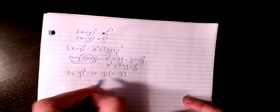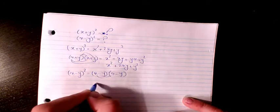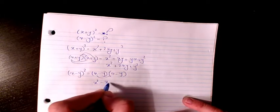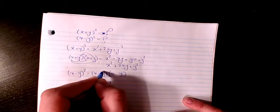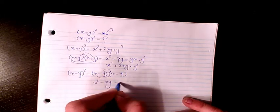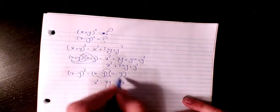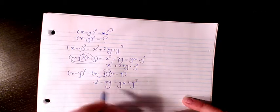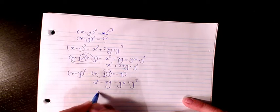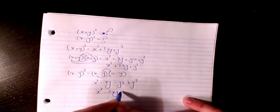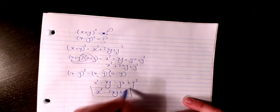x times x is x², then negative xy, then negative y times x, and negative y times negative y is positive y². So the result is x² − 2xy + y². That's the proof.